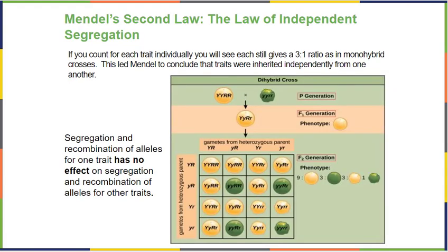Mendel's second law of genetics is referred to as the law of independent assortment, and it's seen in this cross. Just because a parent gives a dominant allele for one trait does not mean that parent has to give the dominant allele for the other trait. Those things travel independently, which is why our column and row headings had to account for all potential pairings.